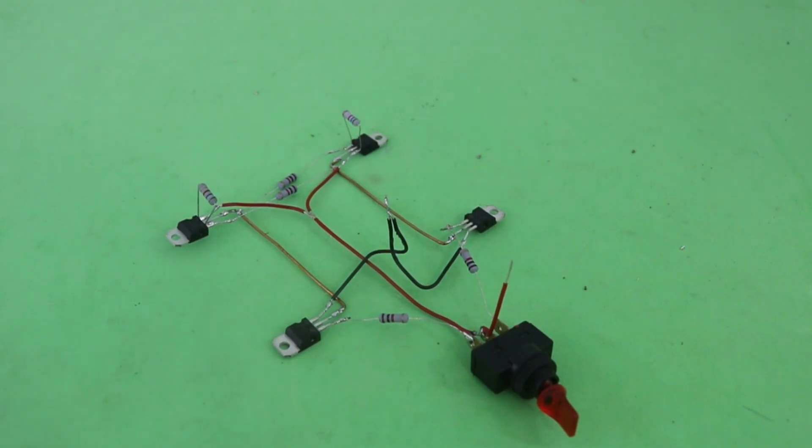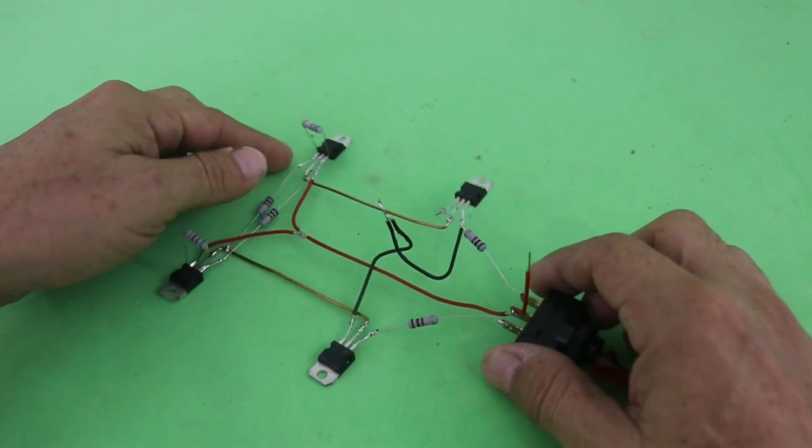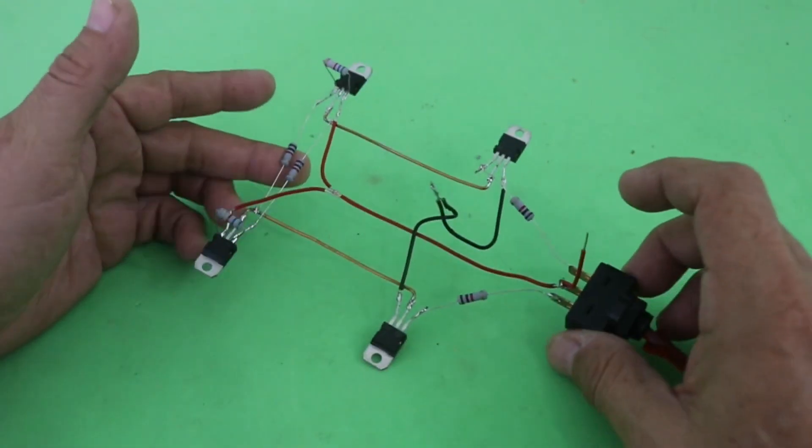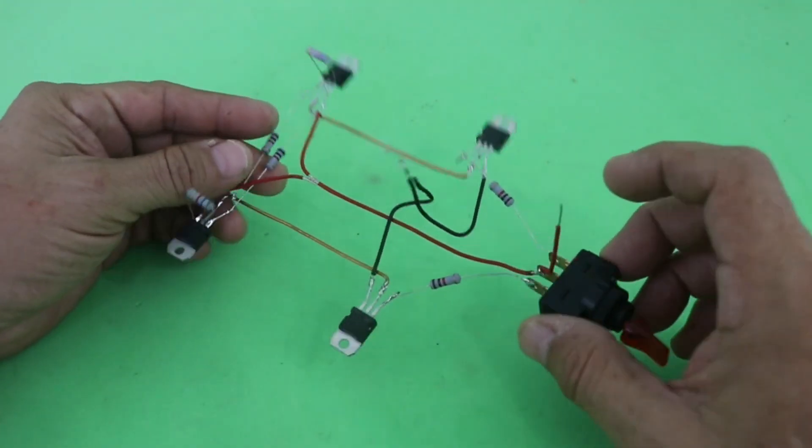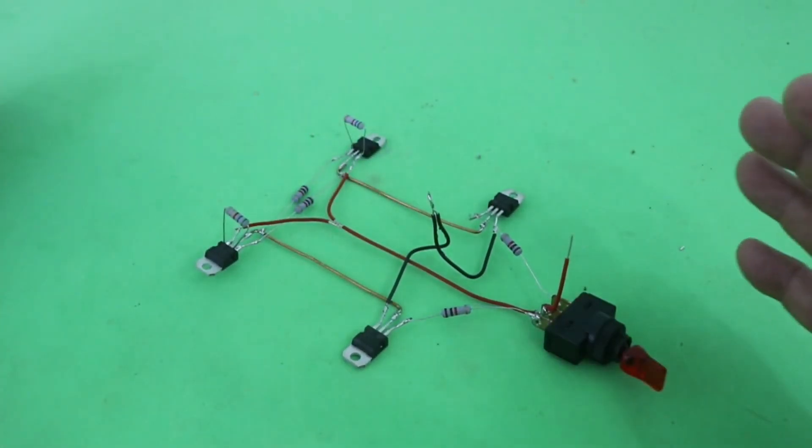Hello, welcome to Ludic Science. In this video I will show you how to make this H-Bridge for electric motor control DC motors. With this circuit we can change the direction of rotation of our motor and it is very easy to make.